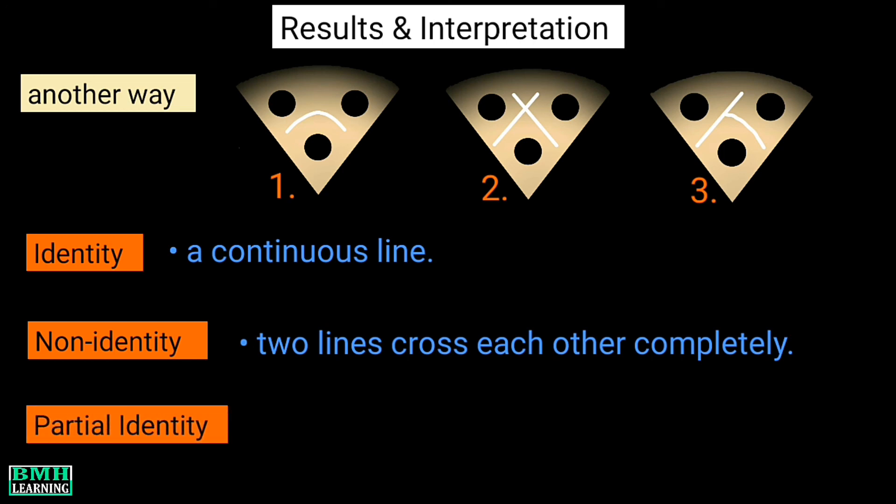Third pattern is partial identity. Here you would see a continuous line having a spur at one of the ends.